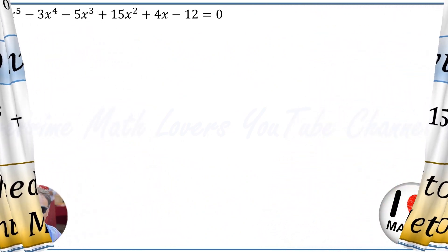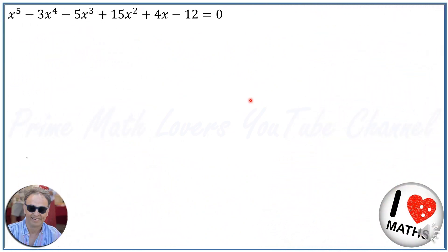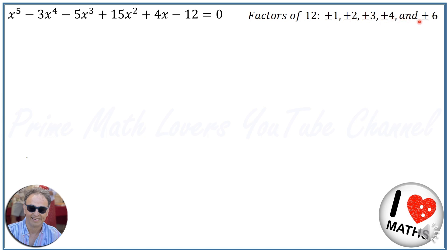In this method, our initial step involves identifying all the factors of the constant term in the equation, which in this case is 12. The factors of 12 are plus or minus 1, plus or minus 2, plus or minus 3, plus or minus 4, and plus or minus 6. We then examine whether any of these numbers could be a root for the equation.